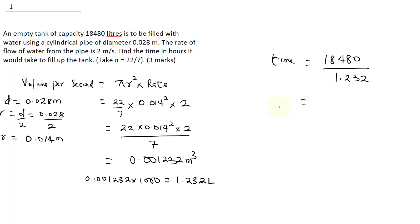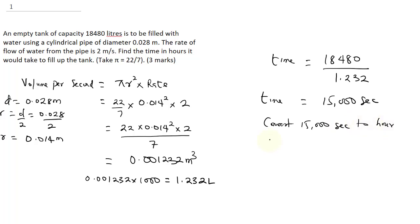When you divide it, you get 15,000 seconds. So this is our time. To find our time in hours, we need to convert 15,000 seconds to hours. All you need to do is 15,000 divided by 60 times 60, where the first 60 converts to minutes and the second 60 converts to hours. So this would be 15,000 all over 3,600.